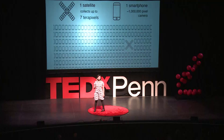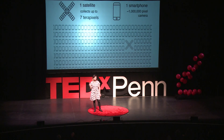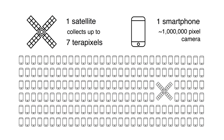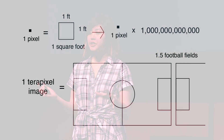To give you an idea of the scales we're working with: as we speak, satellites are circling the globe, taking images of every square foot of the surface of the Earth. A single one of these satellites can capture 7 terapixels of data a day. A good smartphone nowadays might have a 7 megapixel camera. A megapixel is 1 million pixels; a terapixel is a million megapixels. So that's the equivalent of a million smartphones circling the globe taking images. It's incredibly high-resolution data — one pixel here can be about one square foot in resolution. If you were to print out a terapixel image, it would cover about a football field and a half.